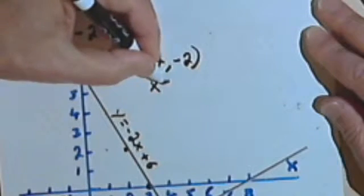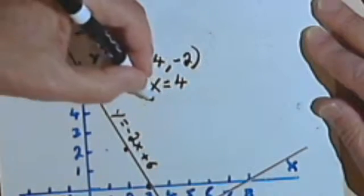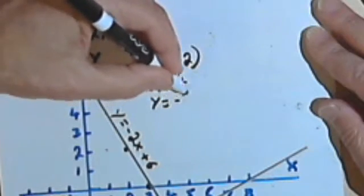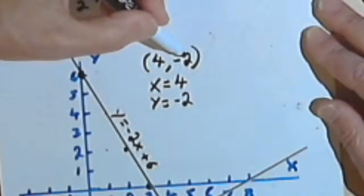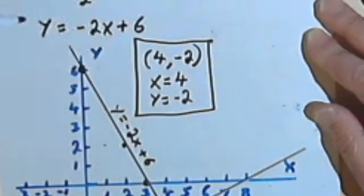Or I can write x equals 4—that's what the first part of the ordered pair is about—and y equals negative 2, that's this number here. So this is my answer, written two different ways.